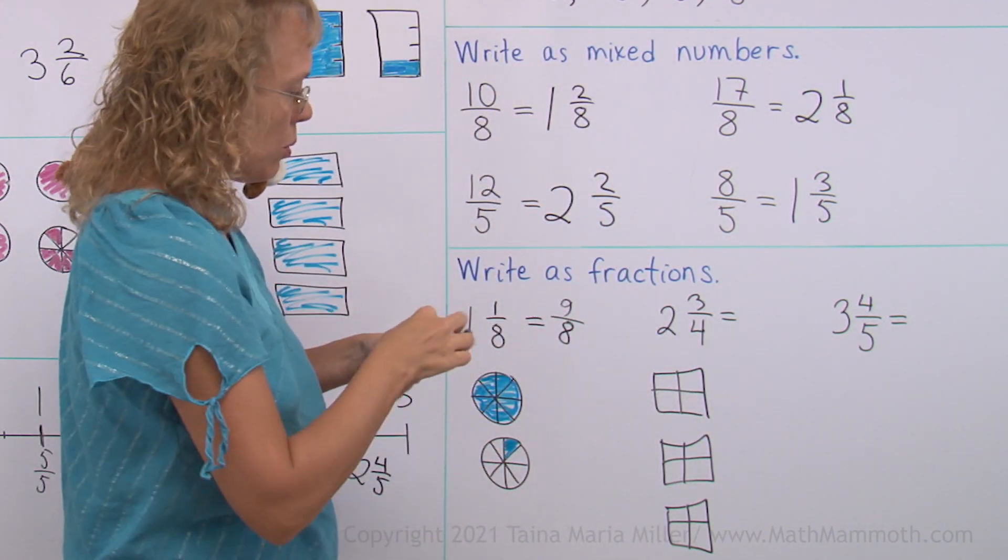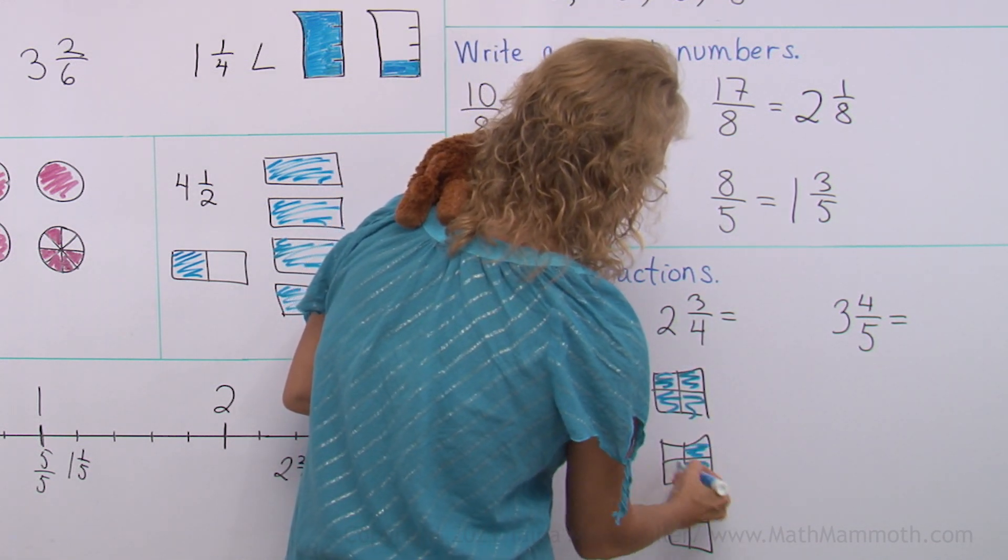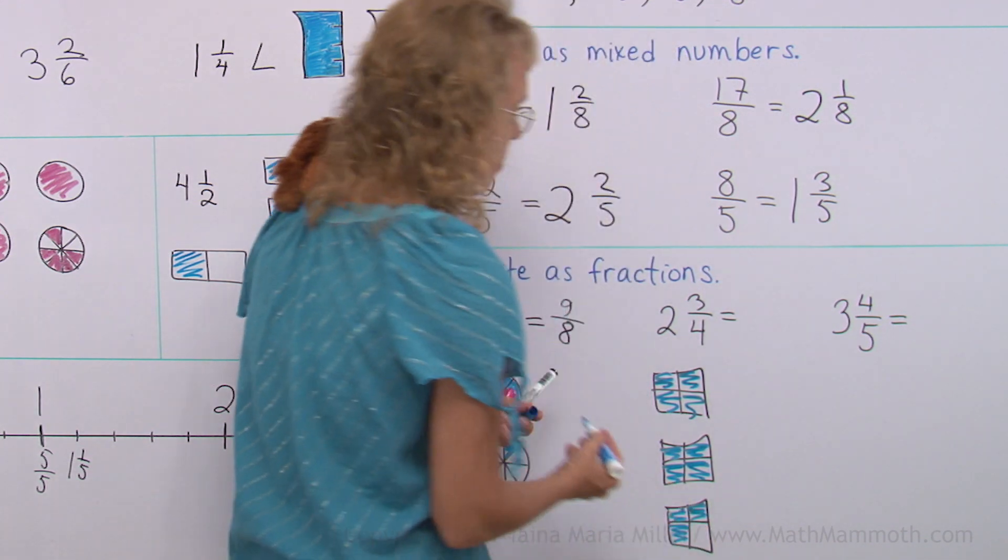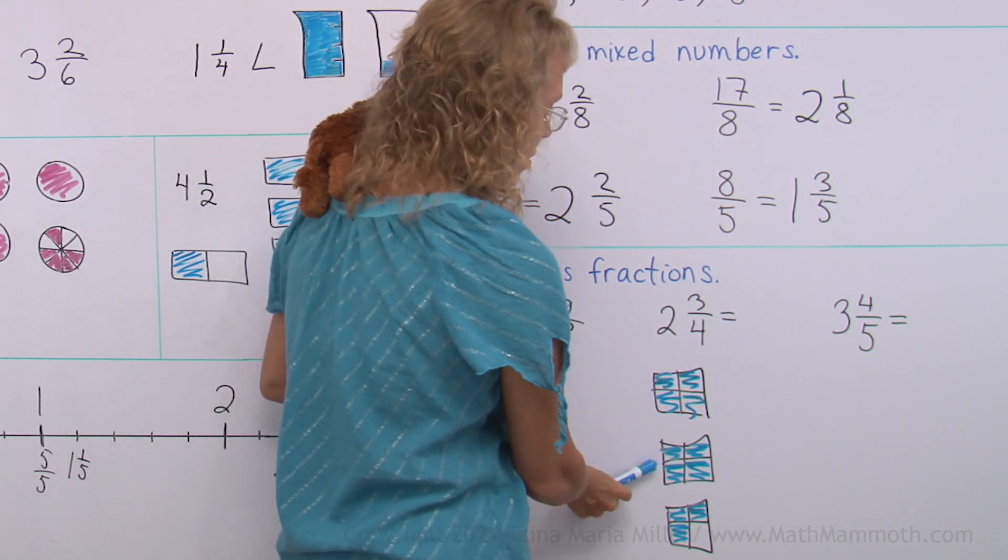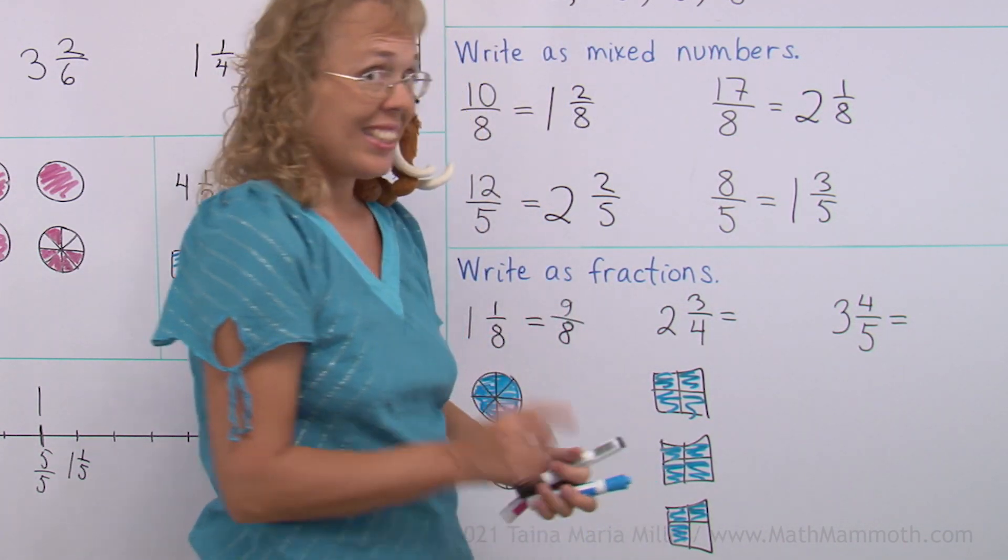And then 2 and 3 fourths. You see, here I have one whole, and now I have 2, and then 3 fourths. But how many fourths are there in total? 4 fourths, 4 fourths, and 3 fourths. 4 plus 4 is 8 plus 3. 11 fourths.